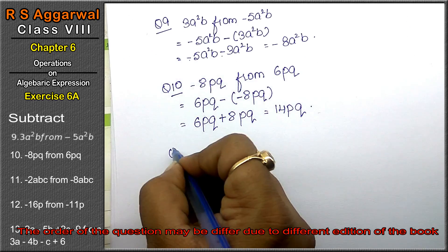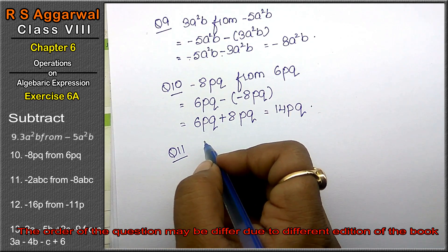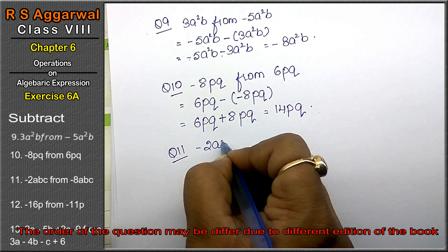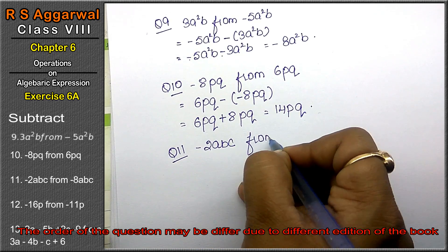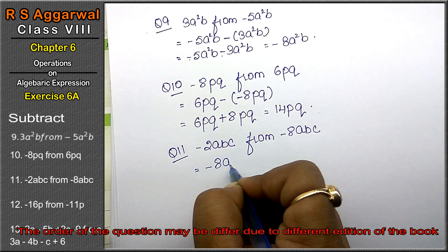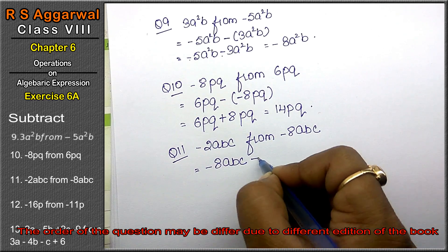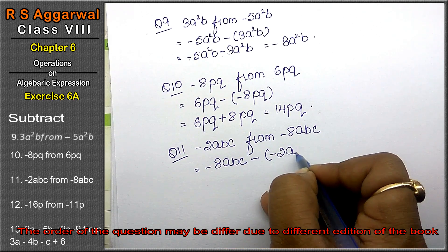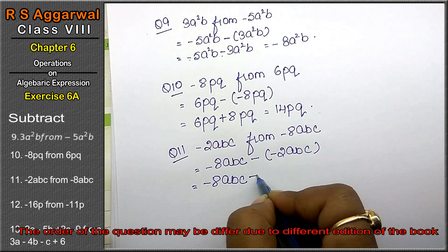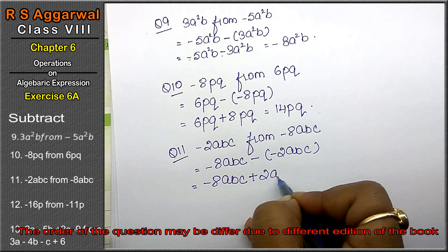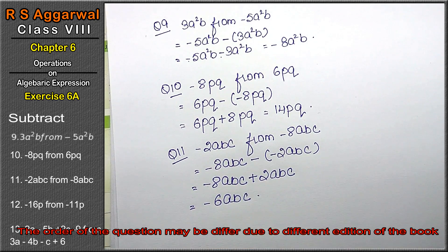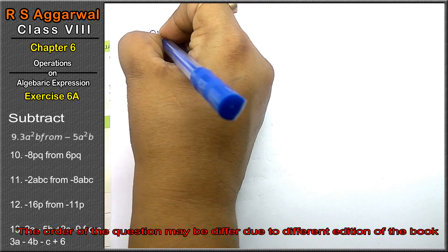Let's do question number 11 of Exercise 6A, algebraic expression. Question 11 is: subtract -2abc from -8abc. We write -8abc first, then apply the subtraction sign. So we get: -8abc - (-2abc) = -8abc + 2abc = -6abc is the answer.